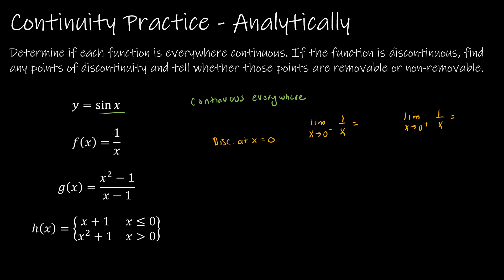If those two limits are the same, then we know it's removable; if they're different, it's not removable. Looking at 0 from the left — values like negative 0.0001 — as this number gets closer to 0, I'm taking 1 divided by an increasingly small negative number, which means this is getting increasingly large in the negative direction, also known as negative infinity. If I do the same thing from the right with positive values, I end up with positive infinity. So this approaches negative infinity from the left and positive infinity from the right — that's an asymptote, and therefore this is a non-removable discontinuity at x equals 0.